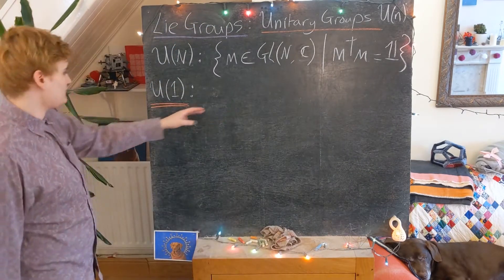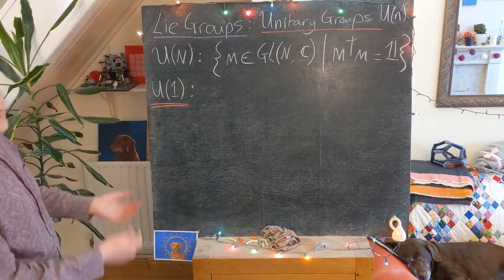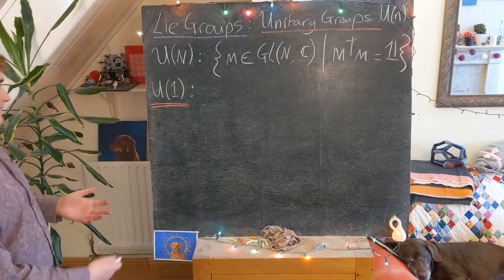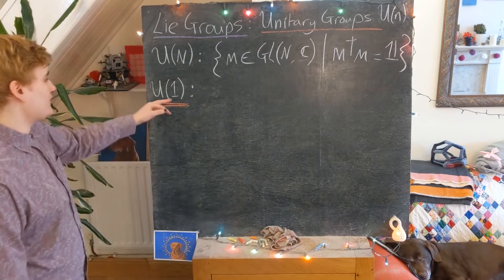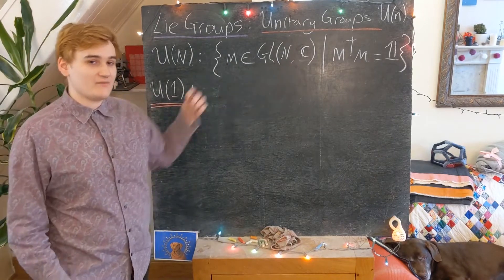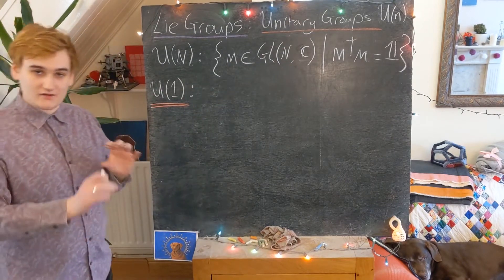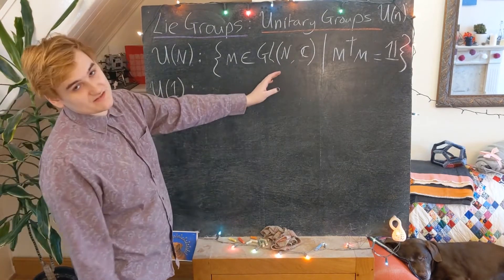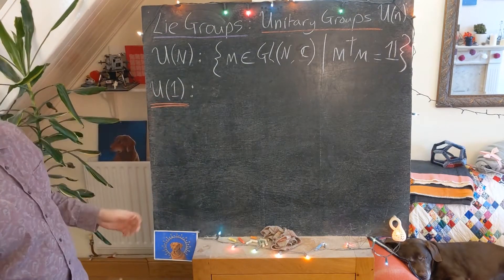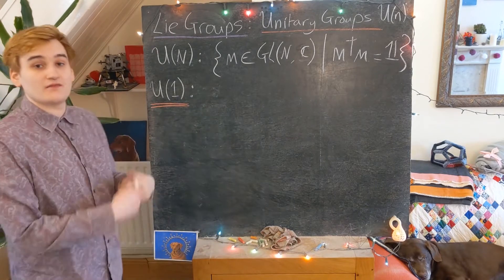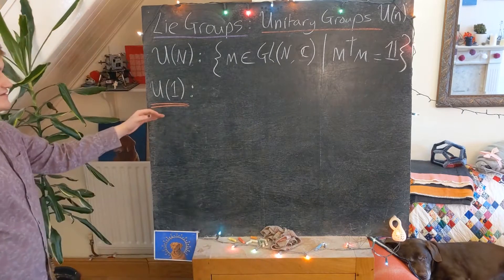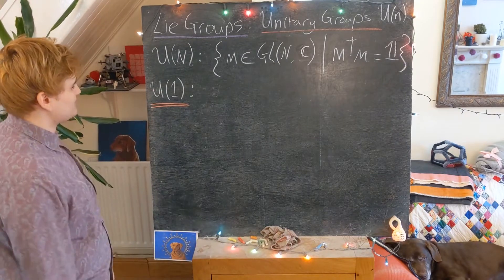The group U(1) is the one-dimensional unitary group, so we're expecting one free parameter. But we need to realize that this is one complex parameter, and a one-dimensional complex parameter actually corresponds to two real parameters. So we'll see shortly that this one-dimensional unitary group is somehow related to the two-dimensional orthogonal group, but for now let's just start considering this unitary group.